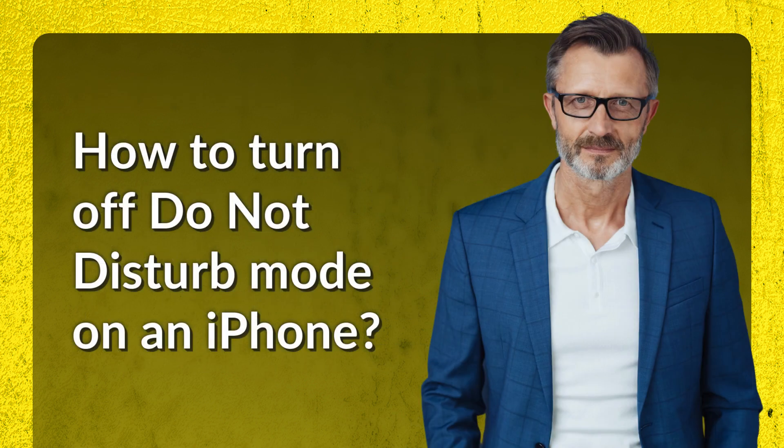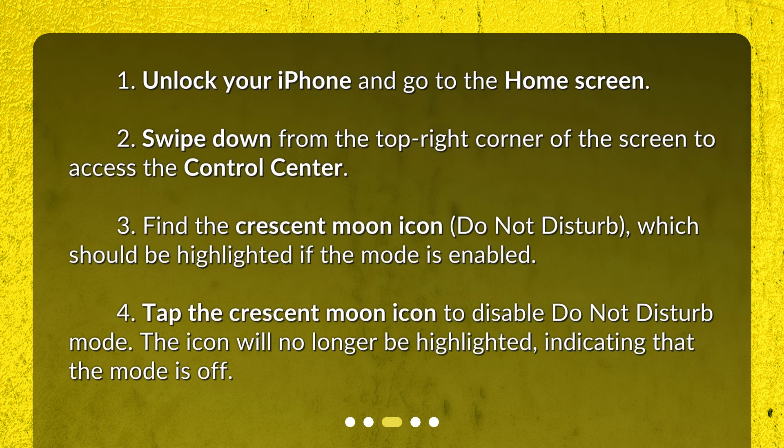How to turn off Do Not Disturb mode on an iPhone? Step 1: Unlock your iPhone and go to the home screen. Step 2: Swipe down from the top right corner of the screen to access the control center.